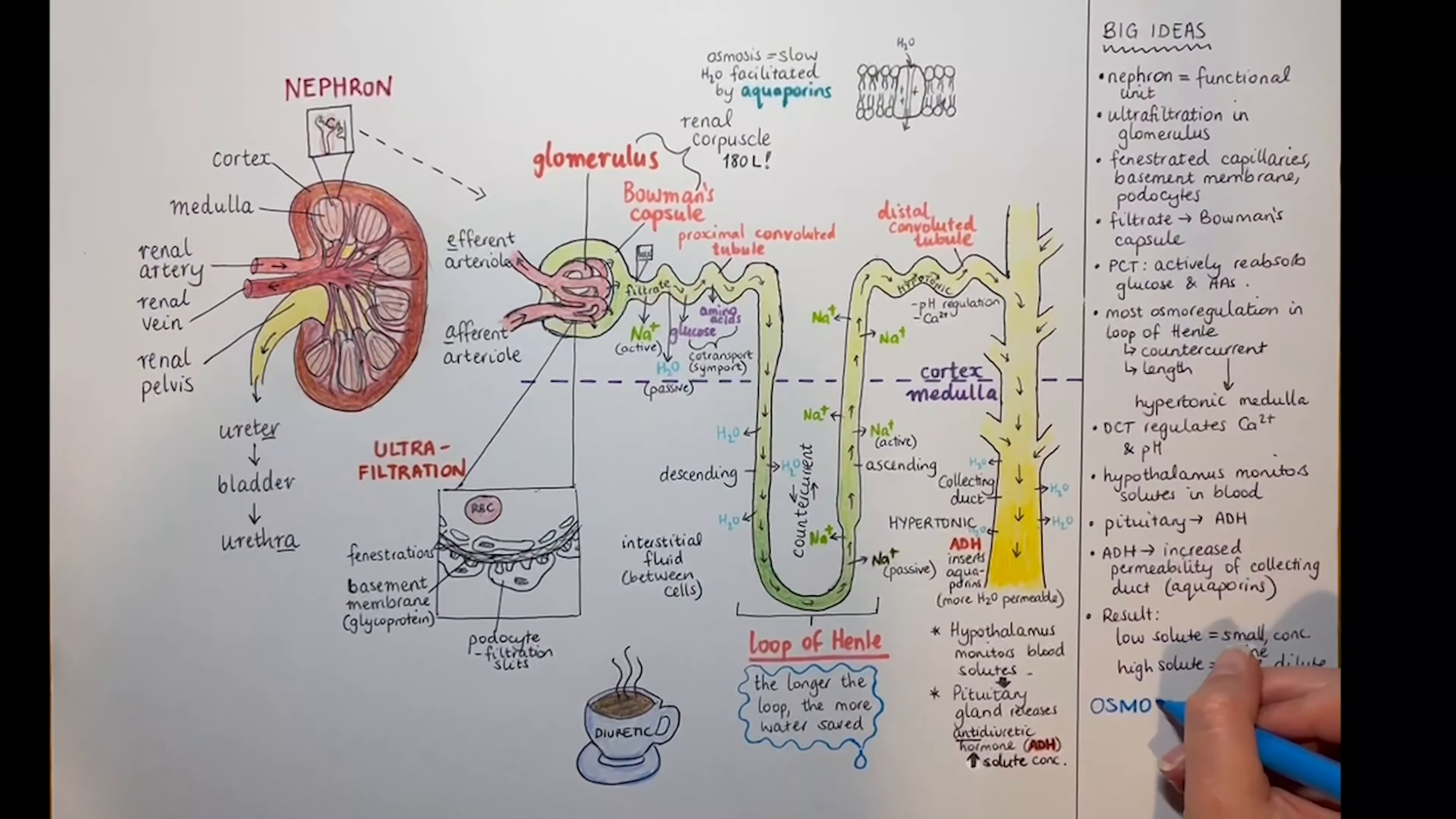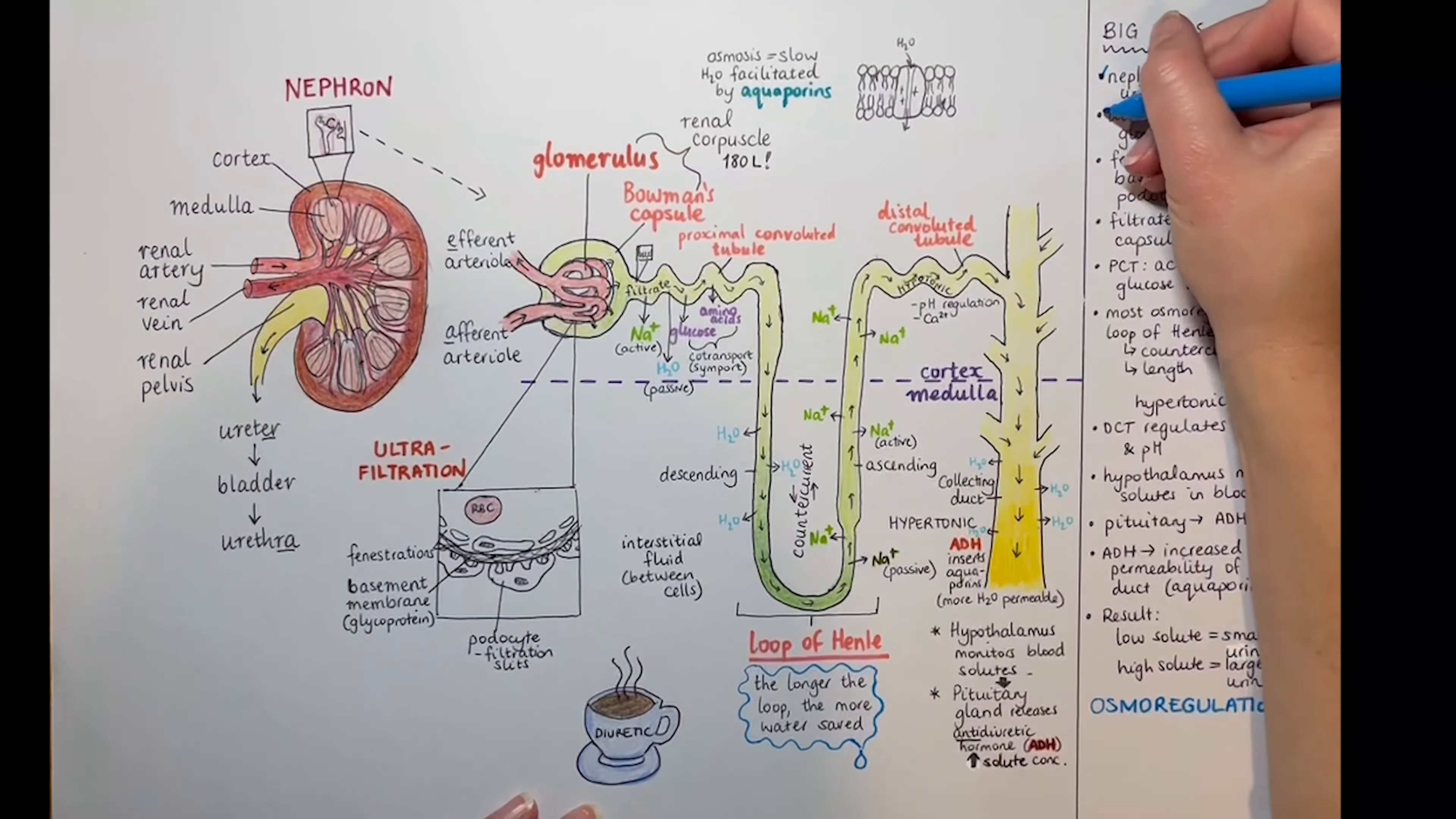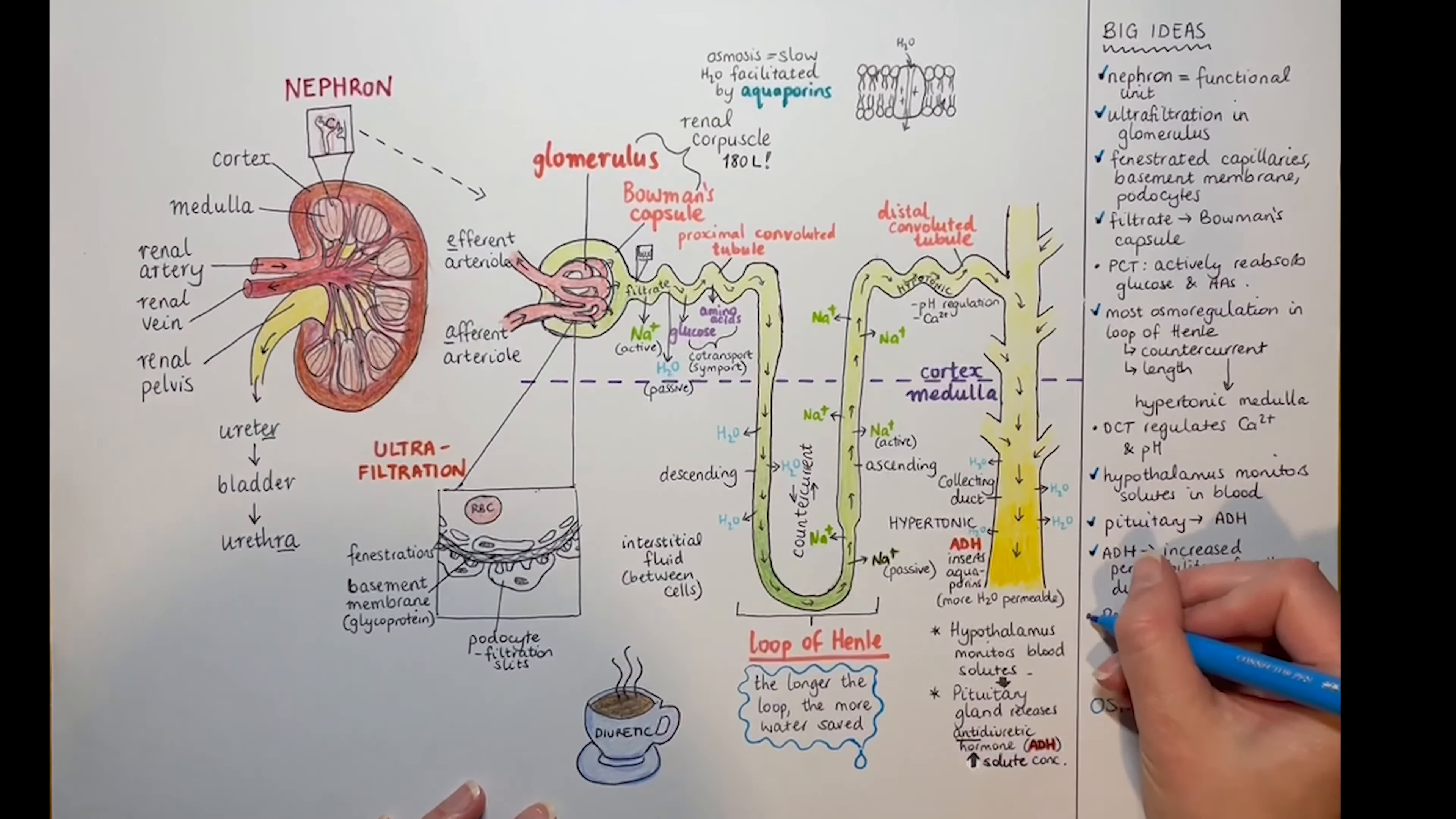What's the question actually asking? Is it asking about general kidney function or is it more specifically about osmoregulation? If it's the latter, remove the unnecessary info, like the bit about glucose reabsorption or pH regulation. Otherwise, you may lose a mark for clarity.